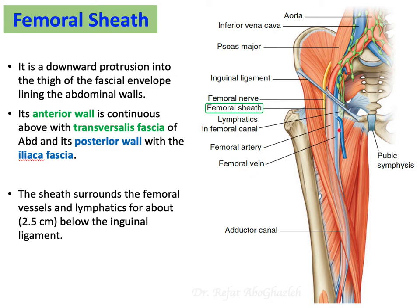Most of the structures in the femoral triangle are encircled and covered by a fascia called the femoral sheath. The femoral sheath encloses the lymphatics, femoral vein, and femoral artery — but importantly, it does not cover the femoral nerve. The femoral nerve is not enclosed within the femoral sheath.